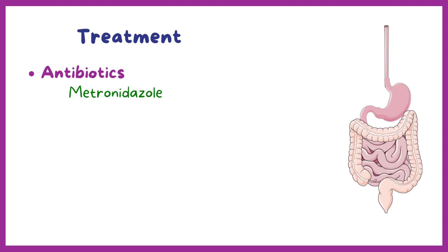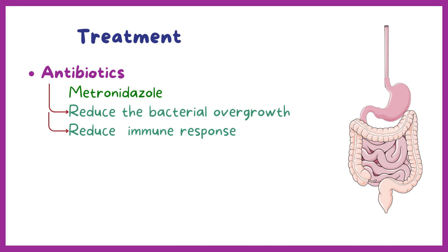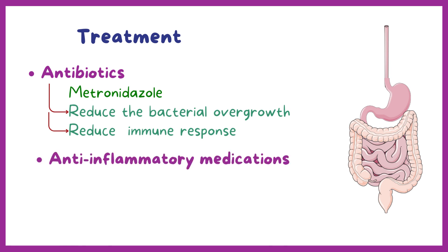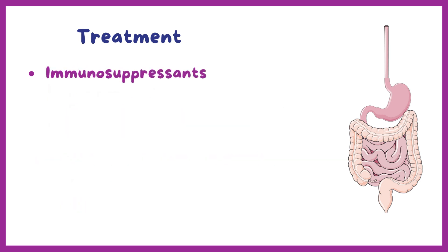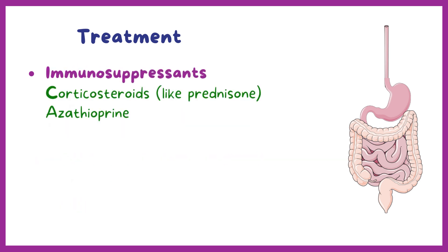Antibiotics such as metronidazole can reduce bacterial overgrowth in the intestine and curb the immune response, since some antibiotics have anti-inflammatory effects as well. Anti-inflammatory medications like sulfasalazine and anti-diarrheals are used for symptom management. If patients have severe symptoms, they may be given immunosuppressants like corticosteroids such as prednisone, and azathioprine.